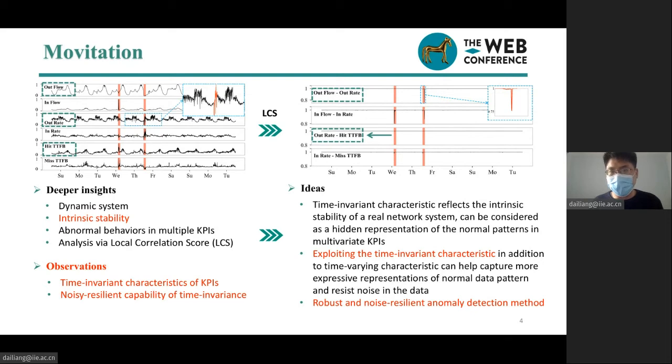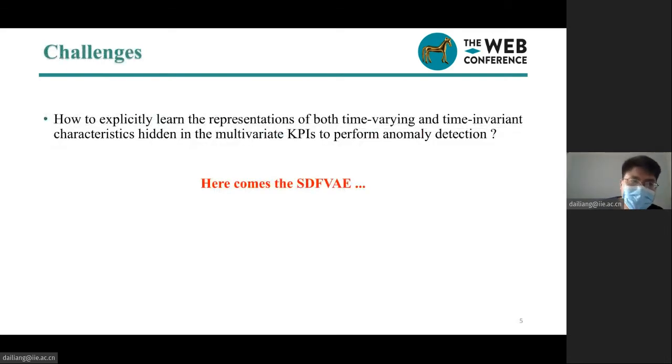Exploring the time-invariant characteristic of multivariate data to build a noise resilient anomaly detection system can not only capture more expressive representations of normal data patterns, but also resist noise in the data. The major challenge is how to explicitly learn the representations of both time-varying and time-invariant characteristics hiding in the multivariate KPIs. Here comes SDFVAE.